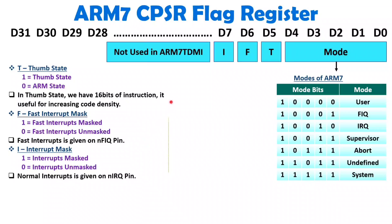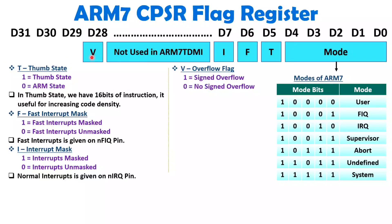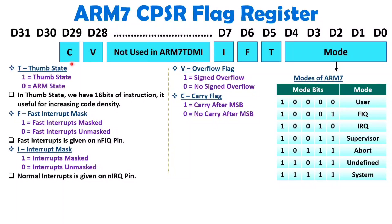Bits between the interrupt control bits and the condition flags are unused by ARM7 TDMI. The V bit at D28 is the overflow flag. If overflow occurs during execution of an instruction, this V bit gets set to 1; it will be 0 if there is no overflow, and this applies to signed operations only. The C bit at D29 is the carry flag — if a carry occurs after the MSB during instruction execution, this bit gets set to 1.